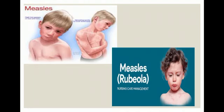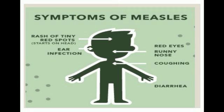Next disease: measles. Measles look like rashes and are caused by a viral infection. The virus name is rubella. Symptoms of measles include rashes of tiny red spots, ear infection, red eyes, runny nose, coughing, and diarrhea. These are the symptoms of measles.